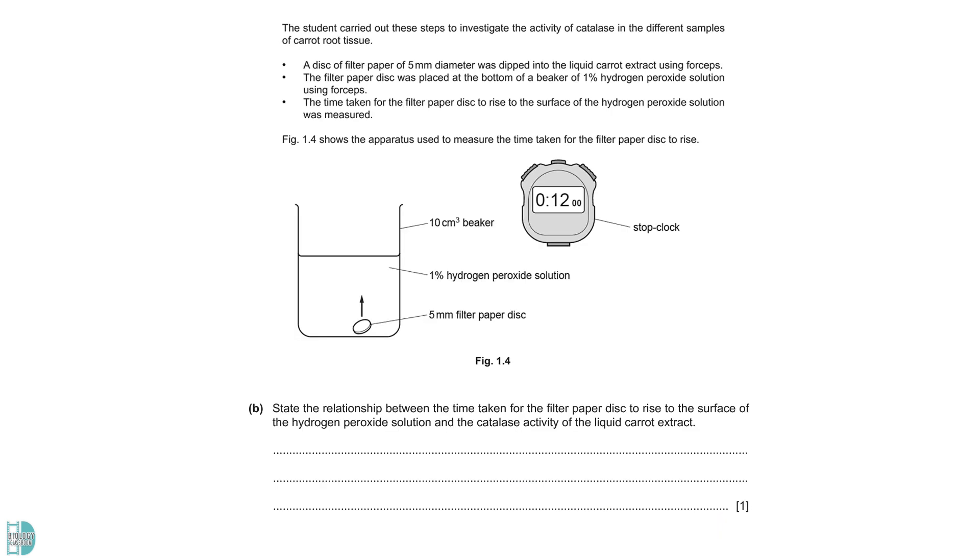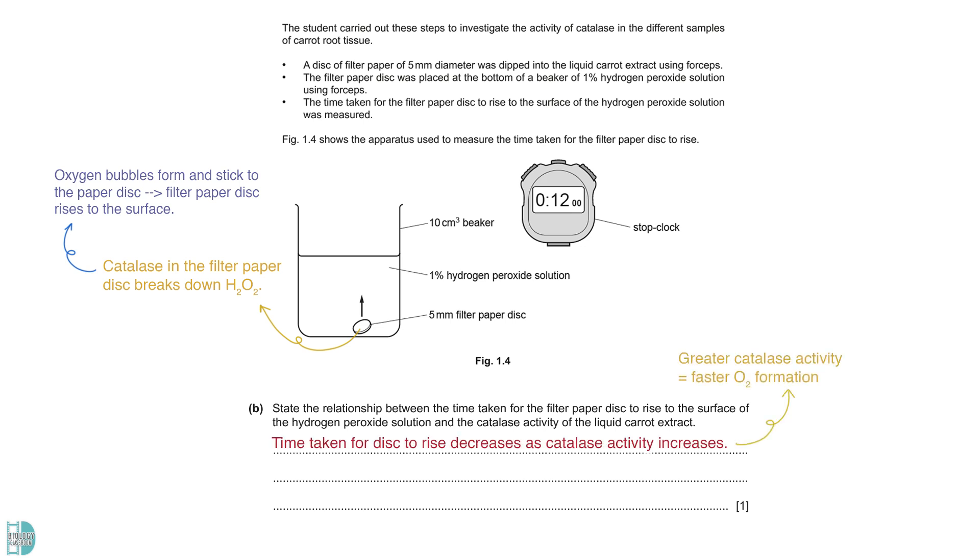State the relationship between the time taken for the filter paper discs to rise to the surface of the hydrogen peroxide solution and the catalase activity of the liquid carrot extract. When a filter paper disc containing catalase is placed in a beaker of hydrogen peroxide solution, the enzyme starts to break down the hydrogen peroxide. Oxygen bubbles form and stick to the paper disc, causing the filter paper to rise to the surface. Greater activity of catalase causes a faster formation of oxygen, which decreases the time it takes for the disc to rise.